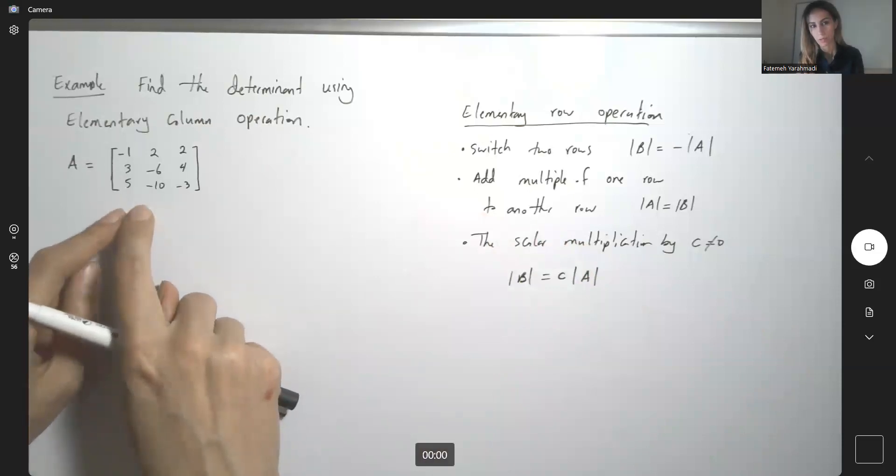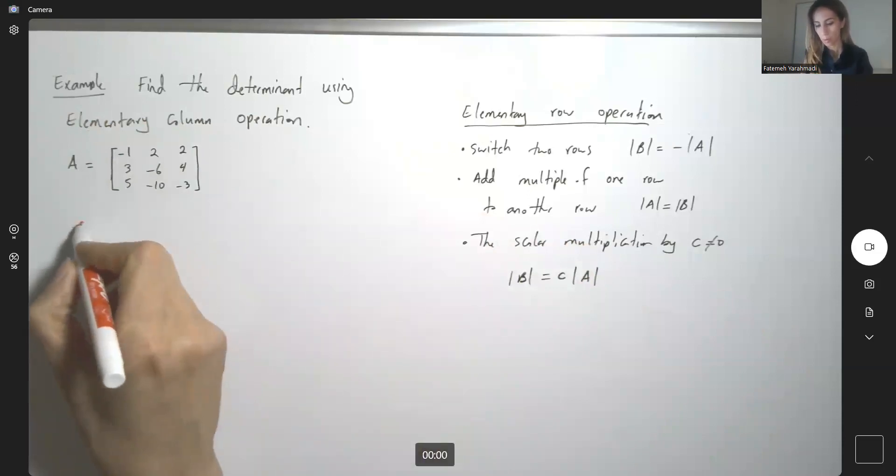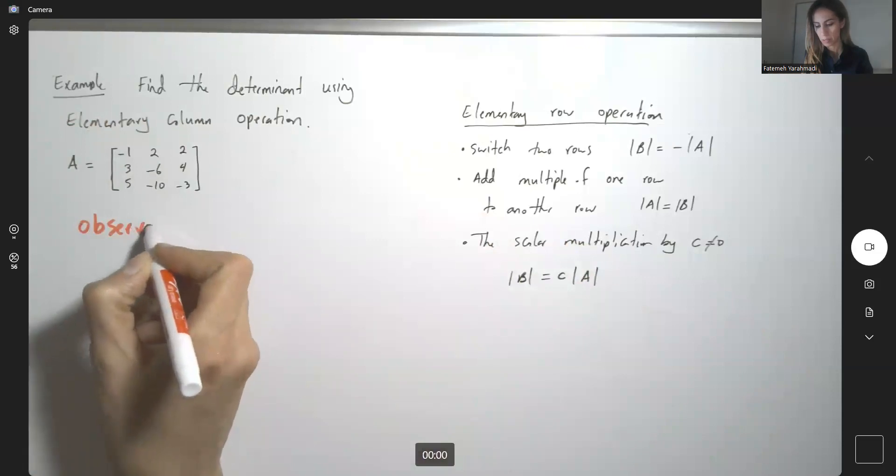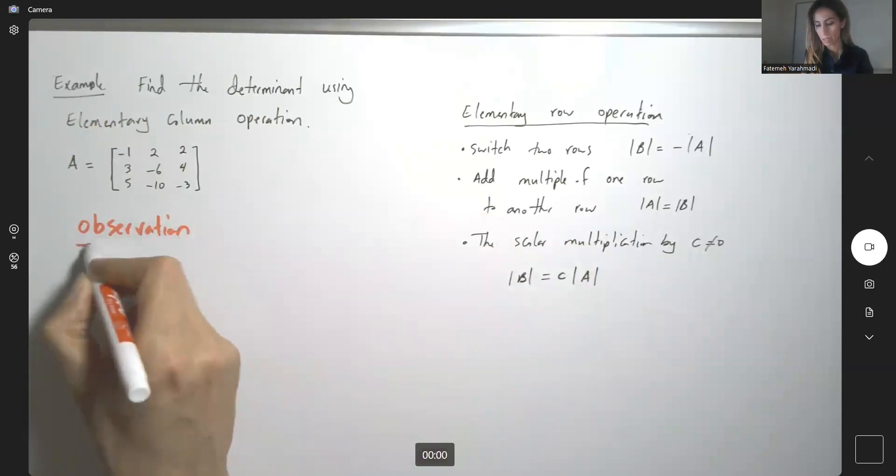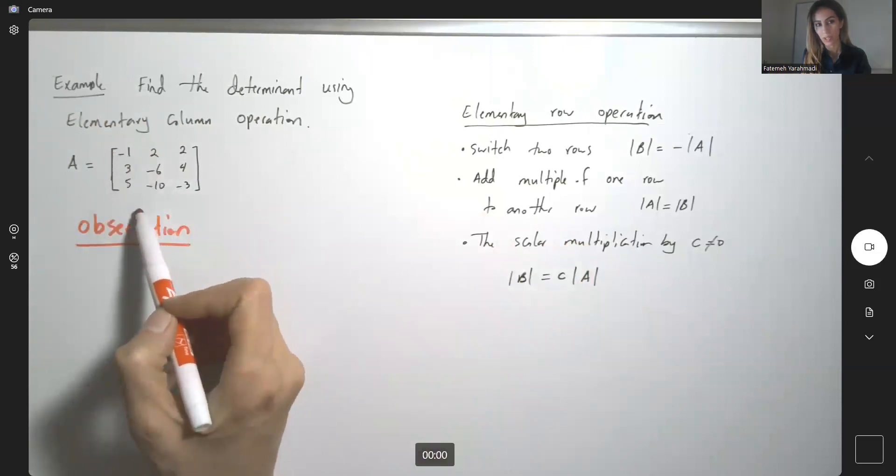Take a look at this here. Why sometimes we need to use column operation? Here we have a cool observation. The observation that we have is related to columns. What is the relation between these two columns?